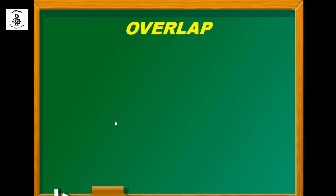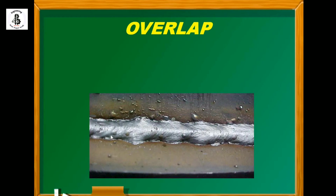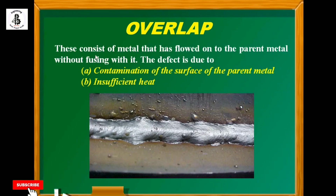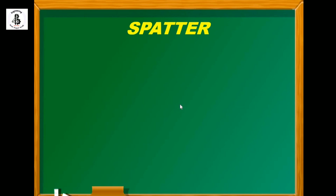Next is overlap. After making a welding joint or completing a pass, the surface needs to be cleaned, otherwise overlapping occurs. If the speed of welding is not properly controlled, this defect appears. It consists of metal that has flowed onto the parent metal without fusing. The defect is due to contamination of the parent metal surface, insufficient heat, or excessive travel speed of the torch or electrode.